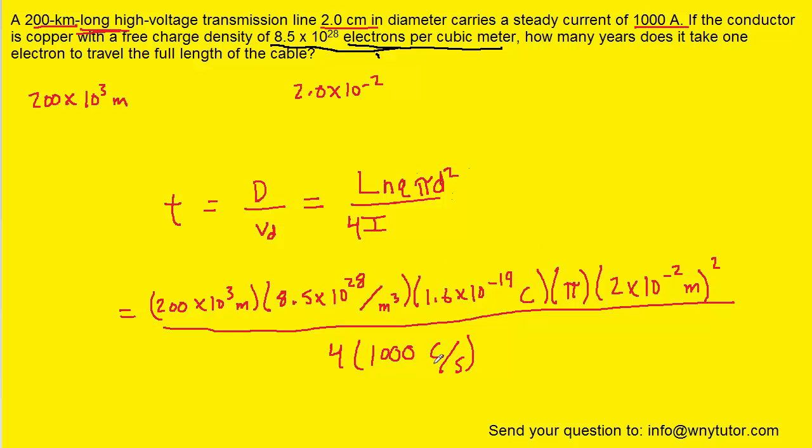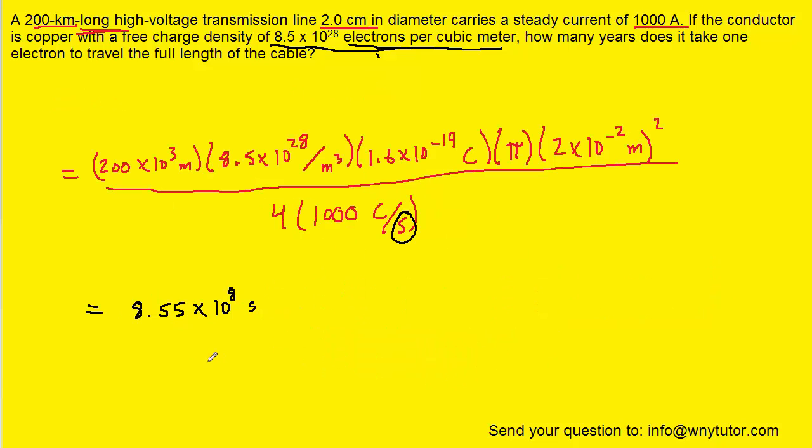When we cancel away all the units, what's left is seconds. So whatever number we get will come out in seconds. Let's compute it. We get 8.55 times 10 to the eighth seconds. The question wants the time in years, so we can do a series of quick conversions.